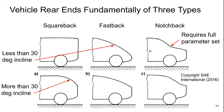We can look at two examples of each. A square back might look like a minivan or the back of an older SUV, or a more modern SUV or crossover rear end where the incline is at more than 30 degrees. A fast back design has a smoother rear end — also what you would call a hatchback — where the incline angle is less than 30 degrees. A notch back is basically a sedan design, requiring a full parameter set, with both a squarish older example and a more modern curvy one.